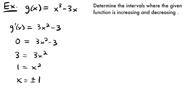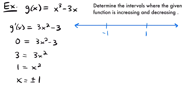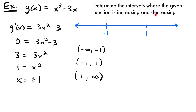Drawing our number line, we label both points: x equals negative 1 and x equals positive 1. This gives us three intervals: negative infinity to negative 1, negative 1 to 1, and positive 1 to positive infinity. We'll test values on our derivative for each interval to determine where the function is increasing and decreasing by looking at the sign of the slope.